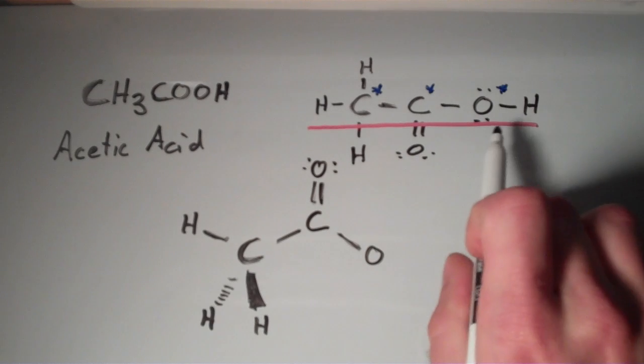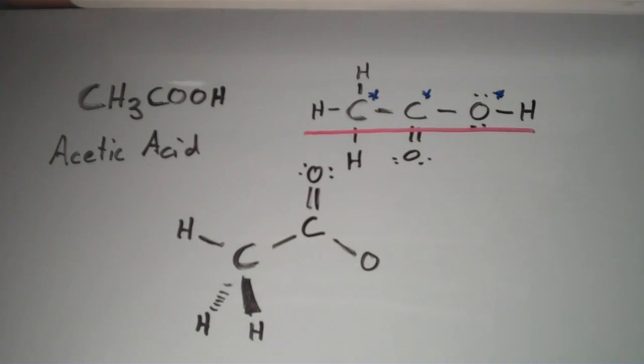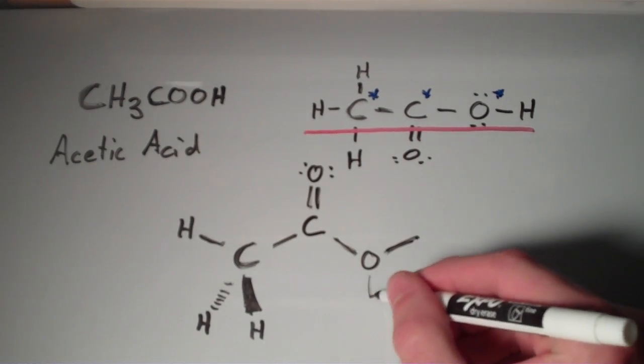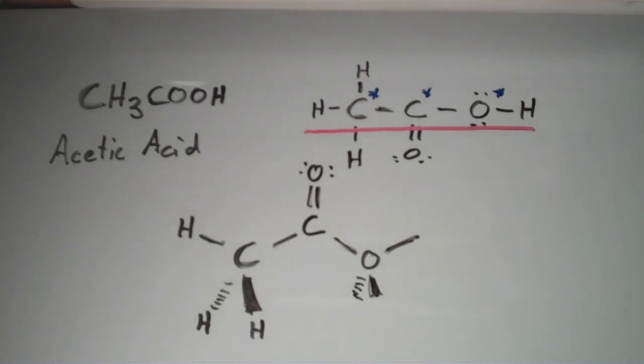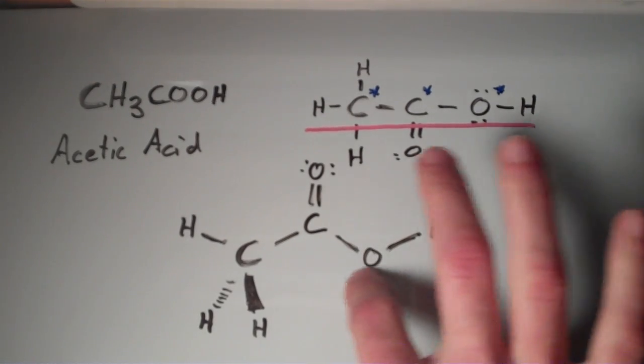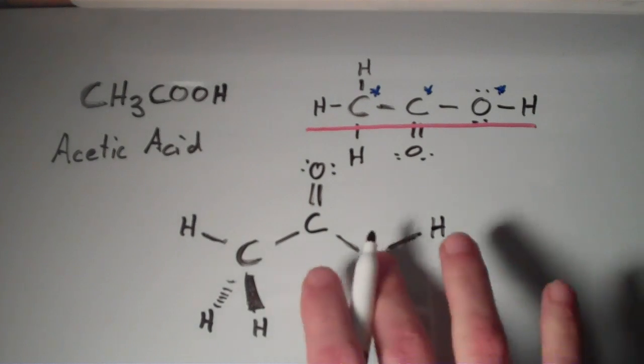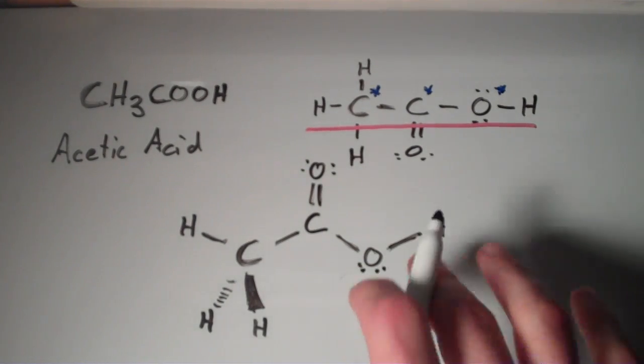The only one left is the oxygen here. The oxygen has four electron groups around it, so that would give rise to a tetrahedral electron geometry, of course. But two of those electron groups are lone pairs, so I'm just going to draw them in as lone pairs. And this is a bent shape, or a bent molecular geometry.